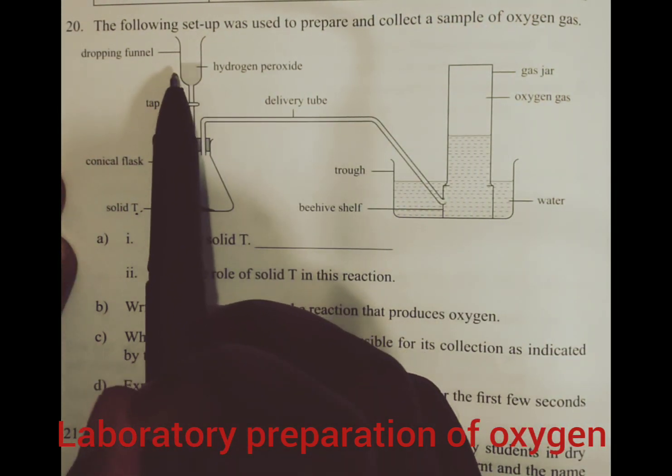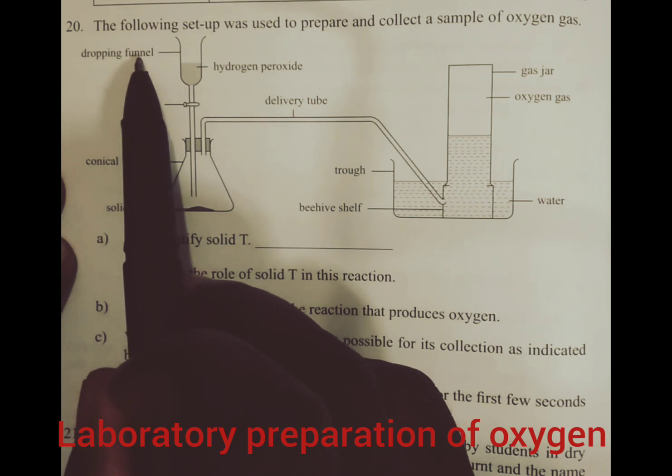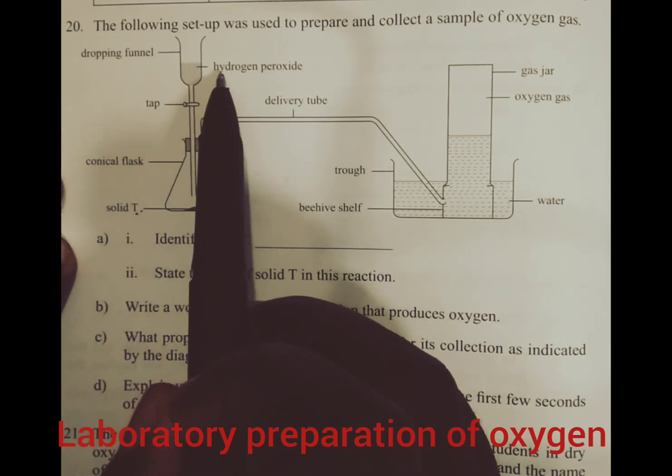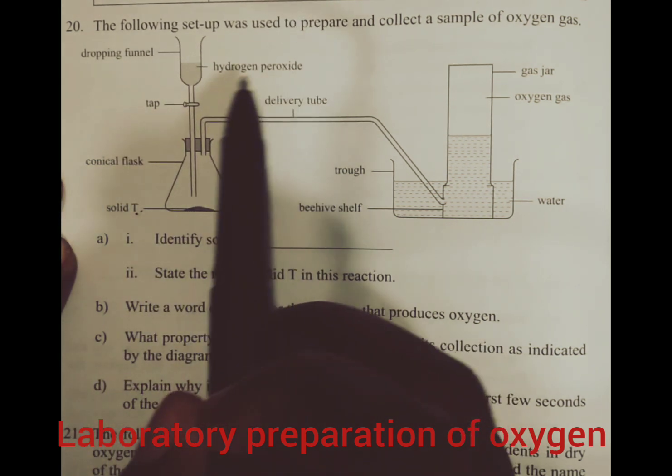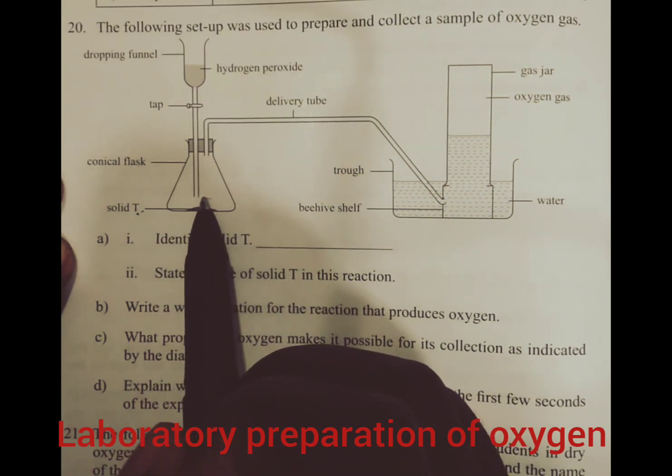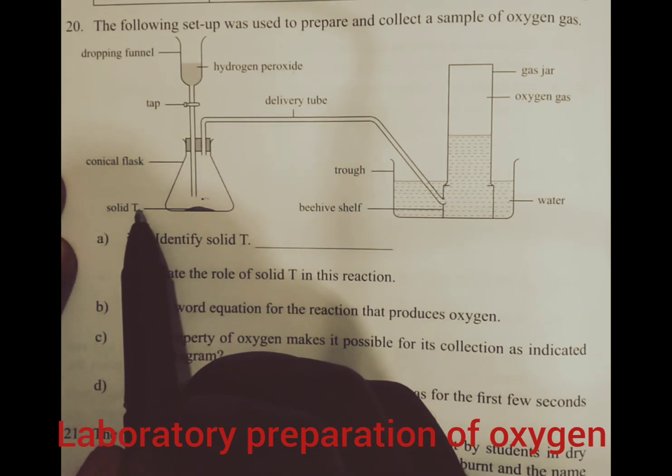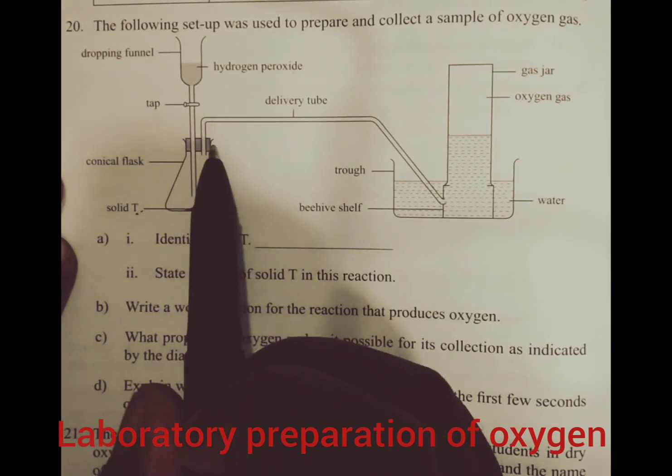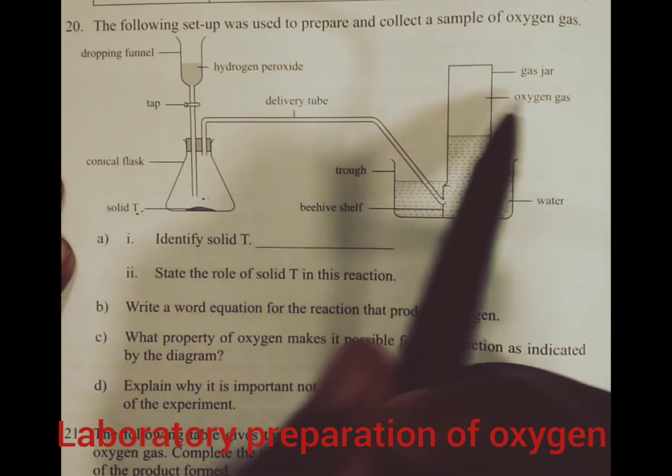We have the setup. We have the dropping funnel that contains hydrogen peroxide. Hydrogen peroxide will come into the conical flask, then decompose to liberate oxygen gas.